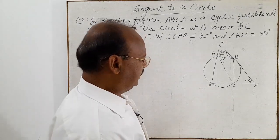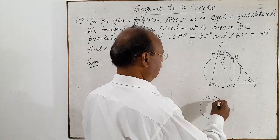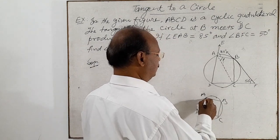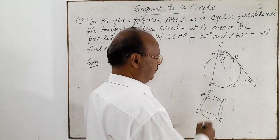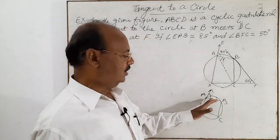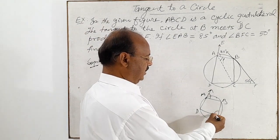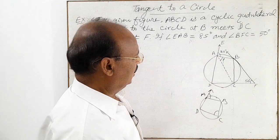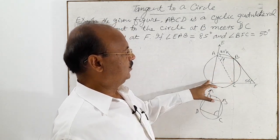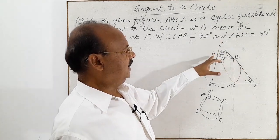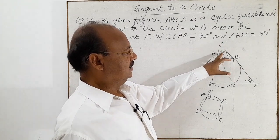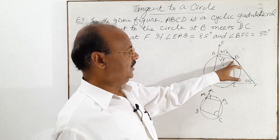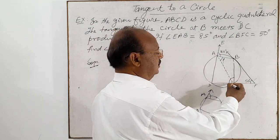First, understand that in a cyclic quadrilateral ABCD, if any side has been produced — suppose DA has been produced — then the external angle so formed is equal to the opposite internal angle BCD. We are using this property here, so angle BCD will be equal to angle EAB, because angle EAB is an external angle when side DA has been produced.